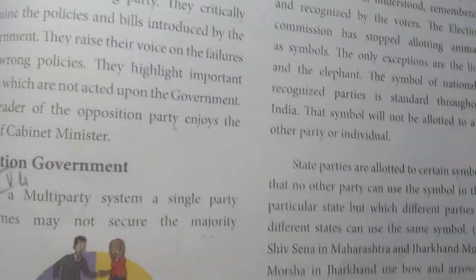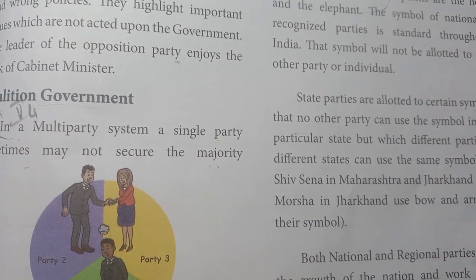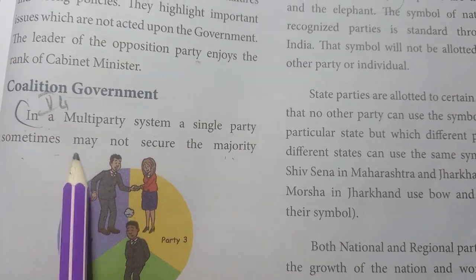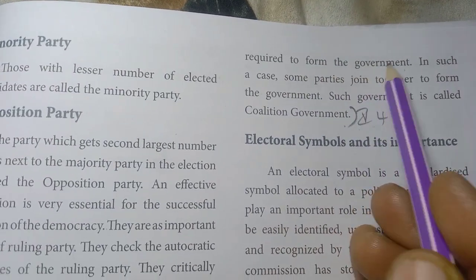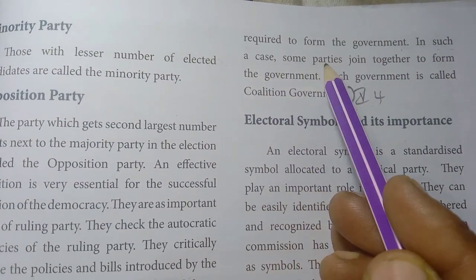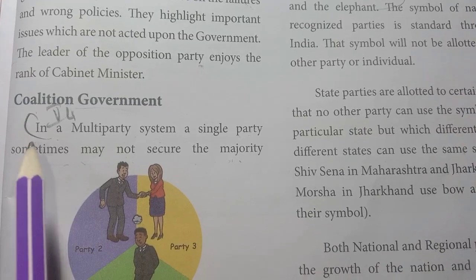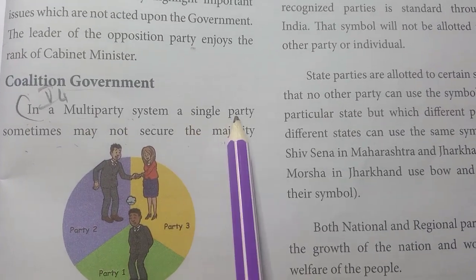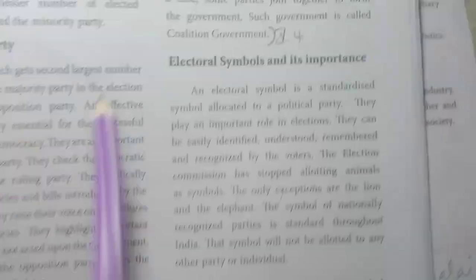Page number 181: Coalition Government. In a multi-party system, a single party sometimes may not secure the majority required to form the government.